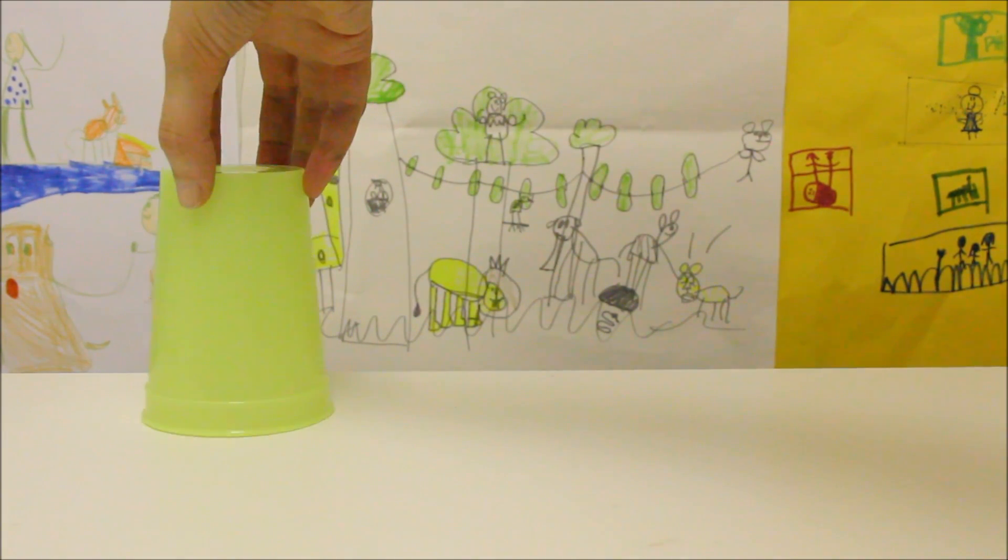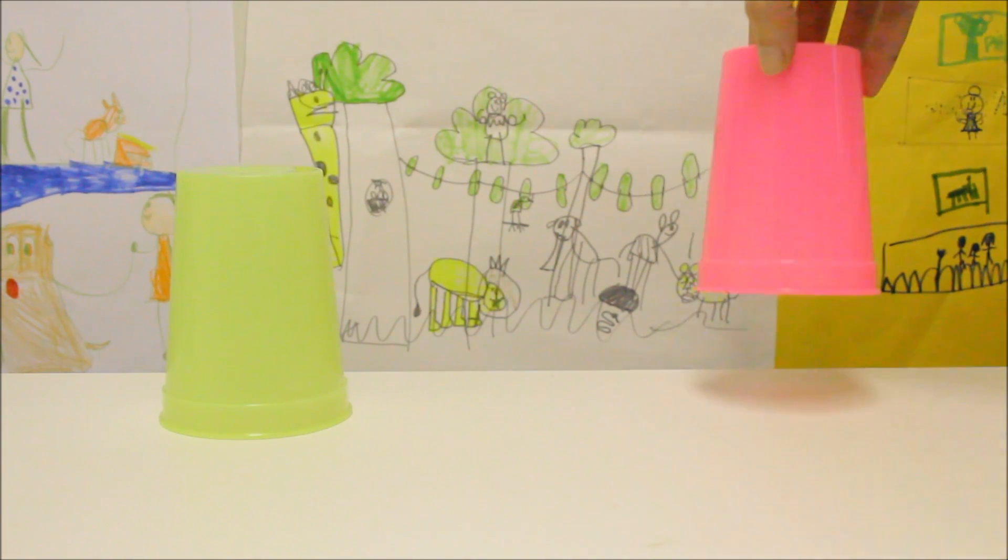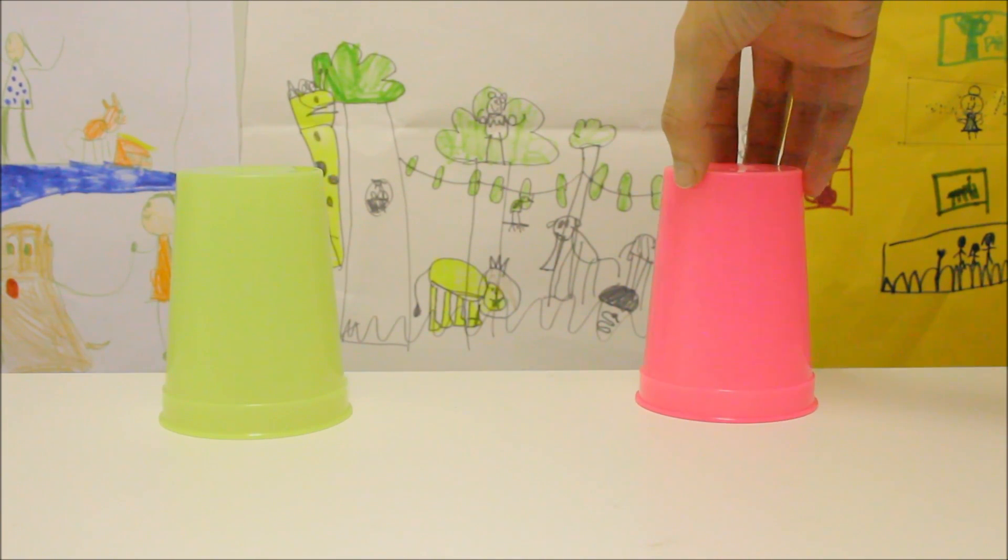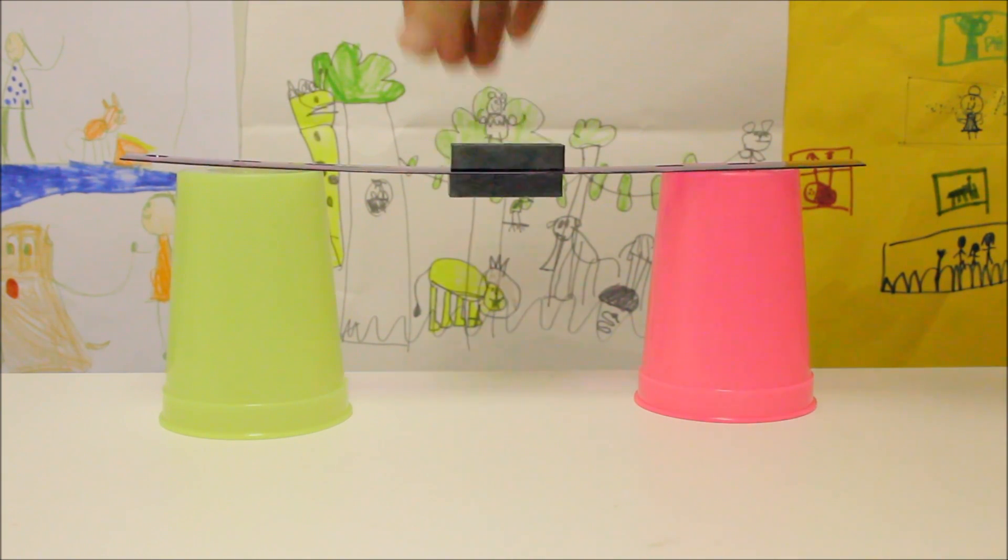Next, let's flip the cups upside down, leaving a space between each cup. Let's place the ruler with the magnets on top of the cups!